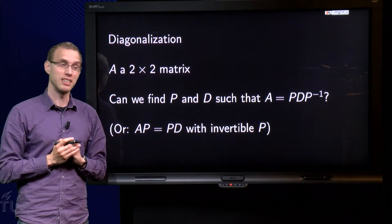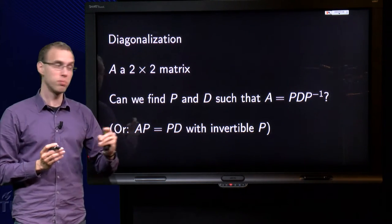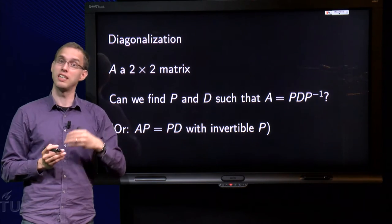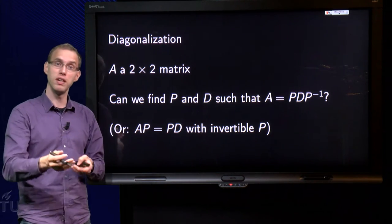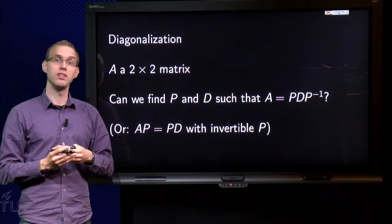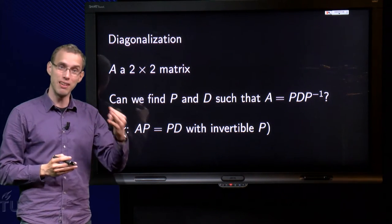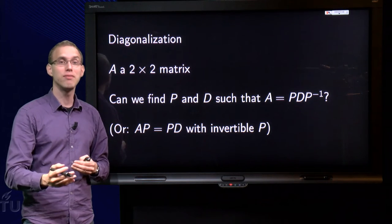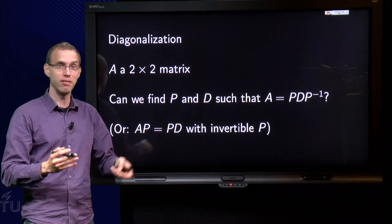Can we find a matrix P invertible and a matrix D such that A equals PDP⁻¹, or AP equals PD with invertible matrix P? So given the matrix A, can we find such a P and D, and how can we find them?